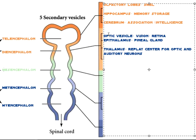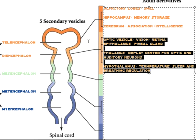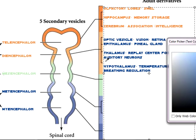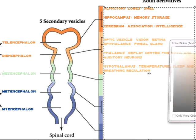And then the last one is the hypothalamus, which controls temperature, sleep, and breathing regulation. And that's kind of like a lighter orange.